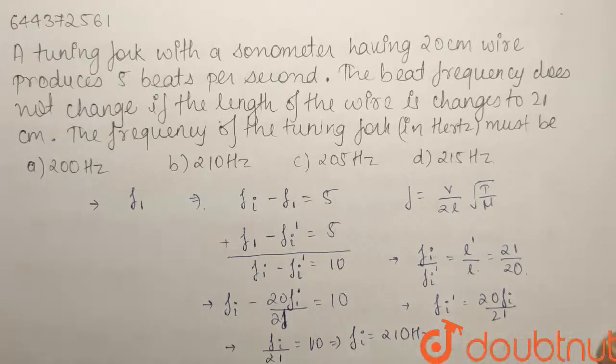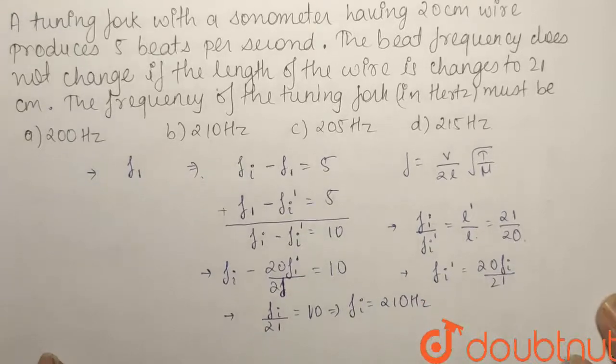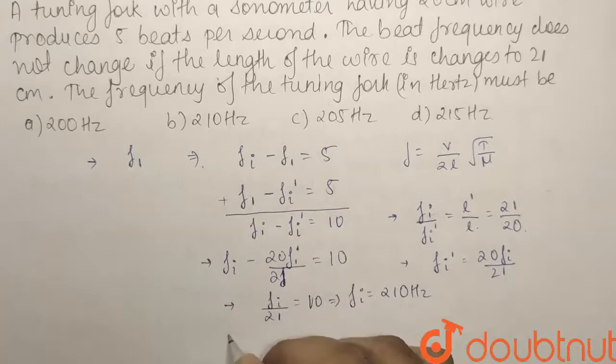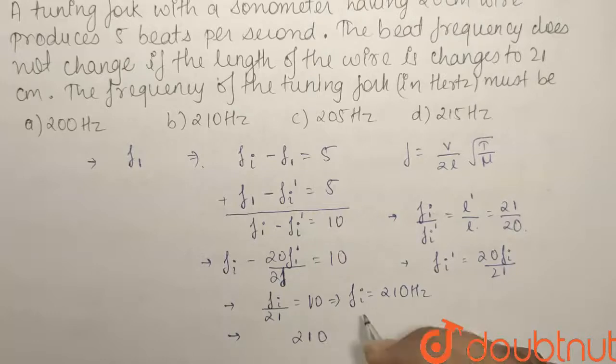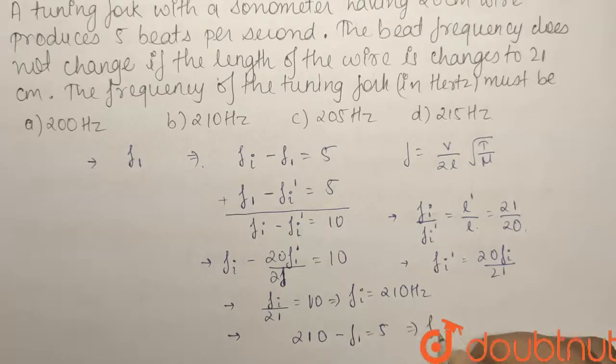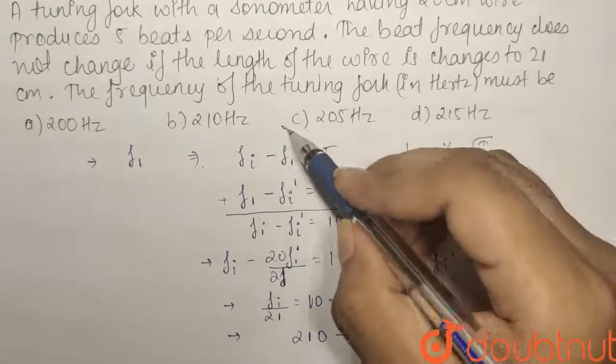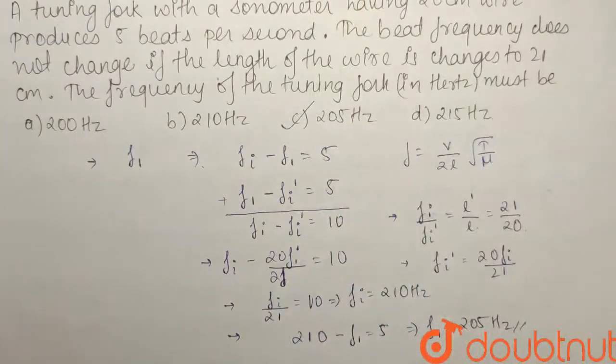Now we have found fi but in the question we have to find the frequency of tuning fork that is f1. From the first equation fi minus f1 equals 5, so 210 minus f1 equals 5. From here f1 comes out as 205 hertz. The tuning fork frequency is 205 hertz and it is the same as option C. Our option C is the right answer.